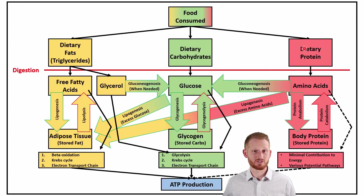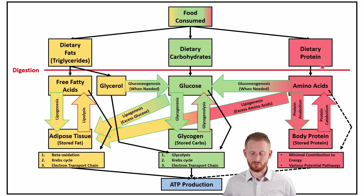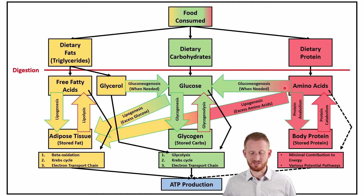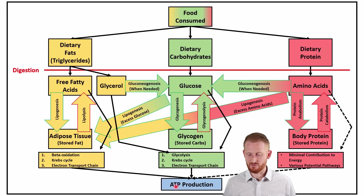The last major food stuff we bring in through digestion is dietary proteins, which become amino acids. Those amino acids can, when needed, go through gluconeogenesis to produce glucose — our body doesn't want to do this, but it can if needed. We can also break down amino acids through protein catabolism and produce ATP through various different pathways, so protein has a lot of different places where it can fit in.